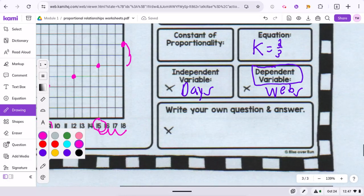And remember, for dependent, the number of webs depends on the number of days. More days would equal more webs.